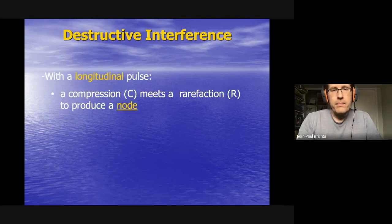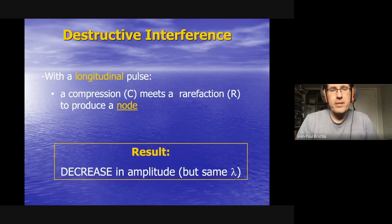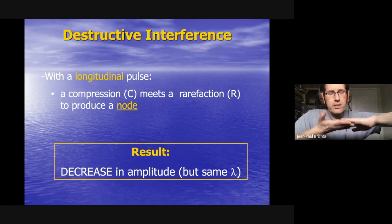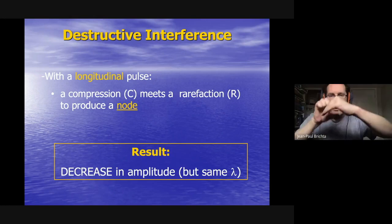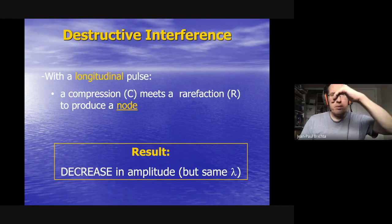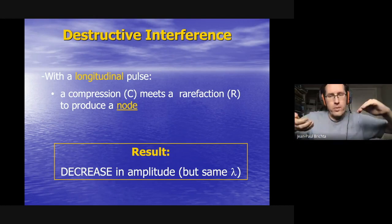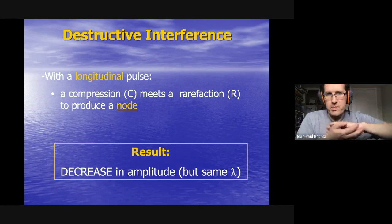The same thing happens with longitudinal pulses. When the two waves meet, the amplitude decreases — in principle, all the way to zero.